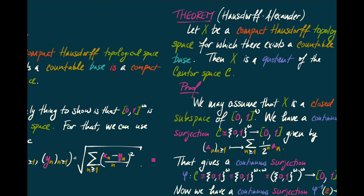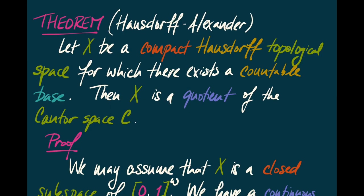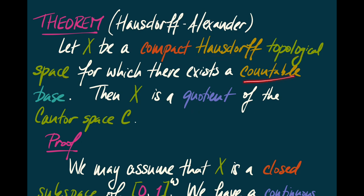Here's another exciting theorem, a corollary of the Urysohn Lemma: the Hausdorff-Alexandroff theorem. In a strong sense, the Cantor space is a universal space. If X is a compact Hausdorff topological space for which there exists a countable base, then X is necessarily a quotient of the Cantor space C. So we've seen that such an X is a closed subspace of the Hilbert cube, but now I'm also asserting that X is a quotient of the Cantor space.